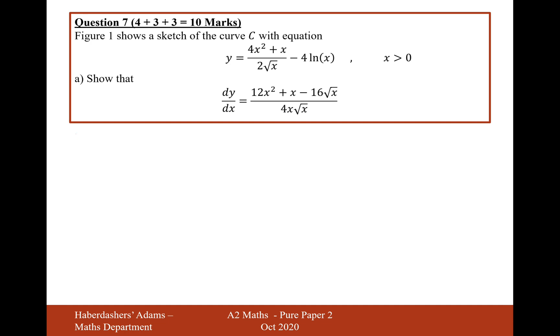So the first thing I'm going to do is rewrite my expression for y in a more differentiable form. I'm going to make two fractions out of this. The first one is going to be 2x^2 divided by x^(1/2), so subtract your powers and you get 3/2 plus 1/2. Then it's x divided by x^(1/2), so that's x^(1/2). Then it's minus 4 ln(x).